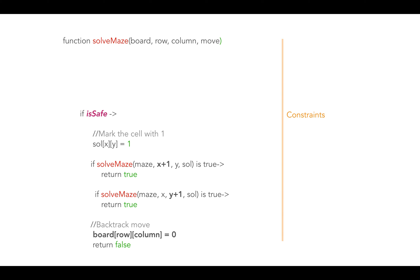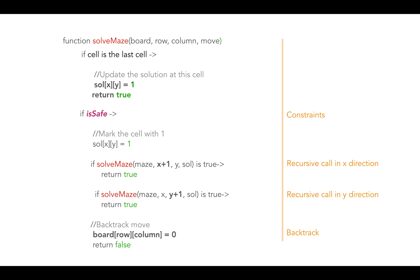This is the complete solution to the maze problem. We have constraints to validate cells, recursive steps based on our choices — moving in the X direction or Y direction. If the choices do not work out, we use the backtracking step to undo our decision for the current cell. Finally, we have the base case which brings us to our goal.